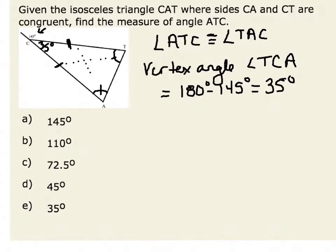We also know that the sum of the interior angles of any triangle is 180 degrees. Therefore, we know that if I added my two angles, ATC and TAC, and 35 degrees...